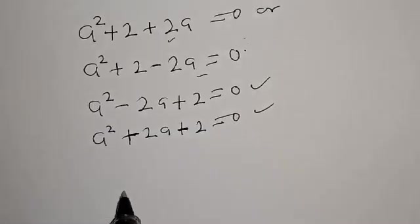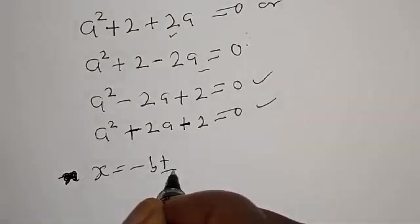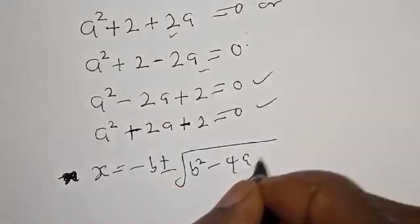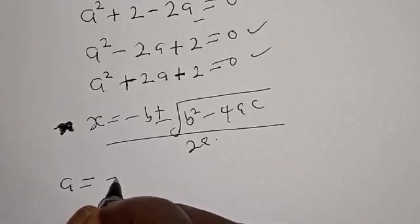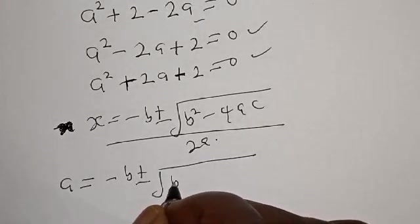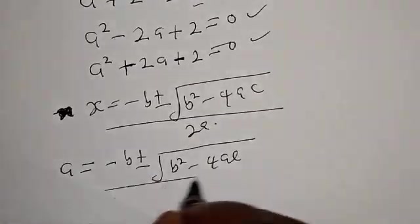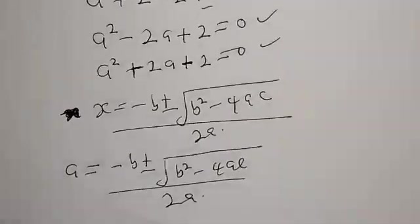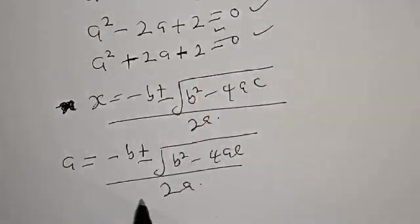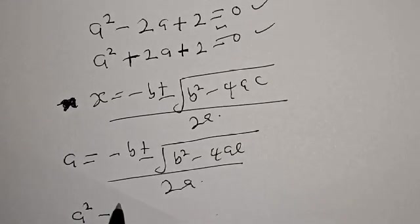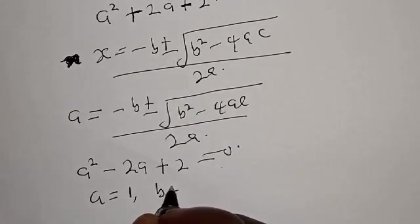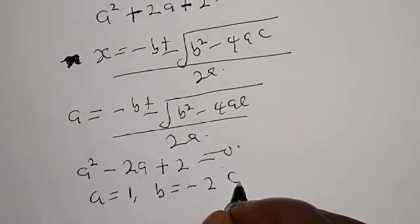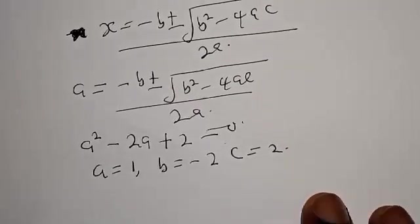Now let's solve using the quadratic general formula: a is equal to minus b plus or minus square root of b squared minus 4ac, over 2a. From the first case of the equation, a squared minus 2a plus 2 equal to 0, we have a is equal to 1, b is equal to minus 2, and c is equal to 2. Let's substitute into the formula.